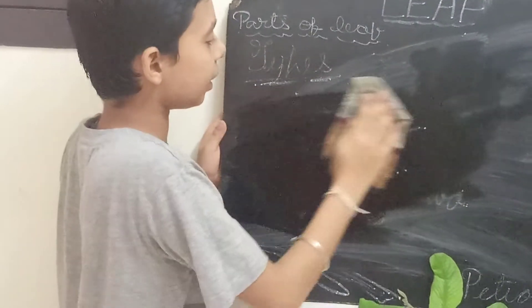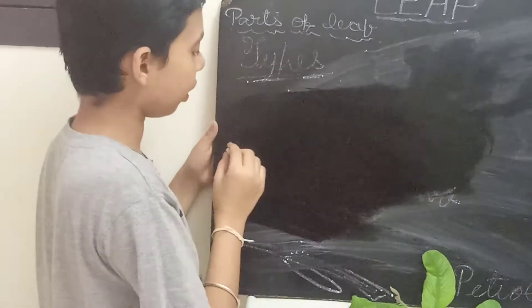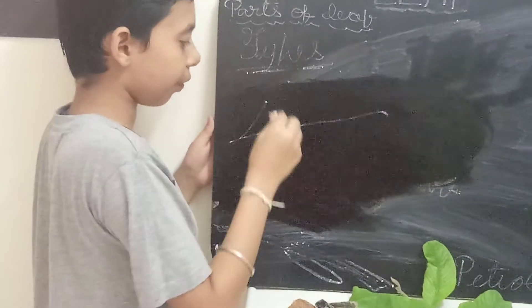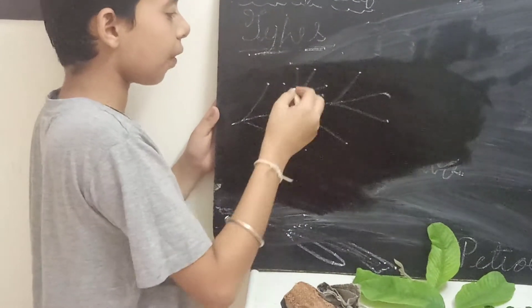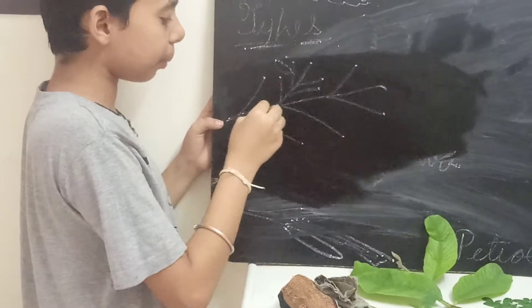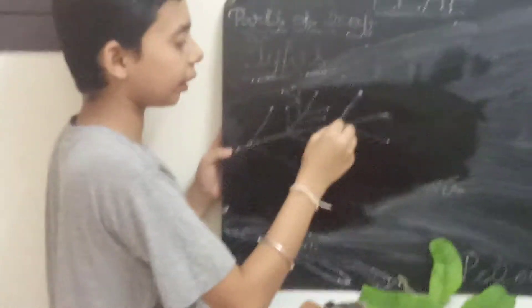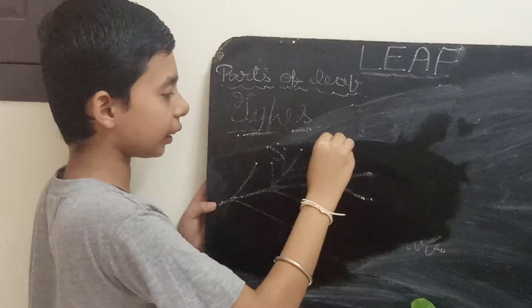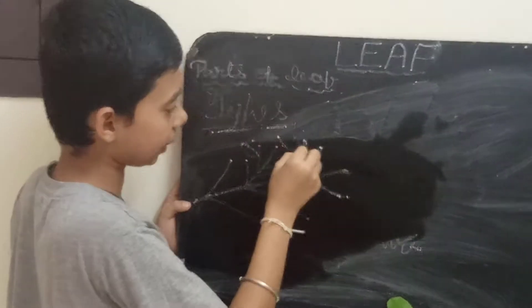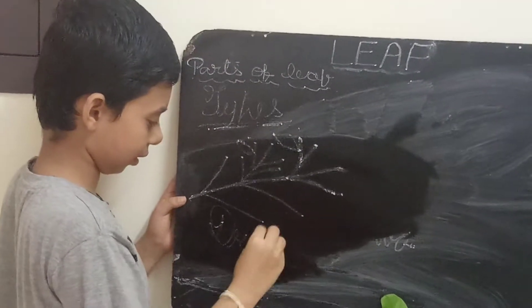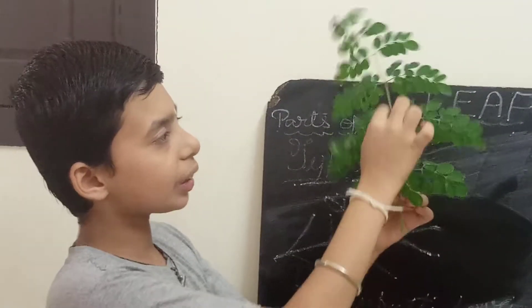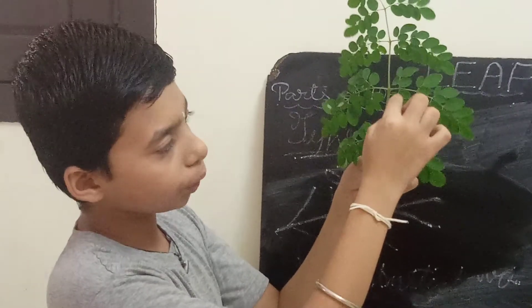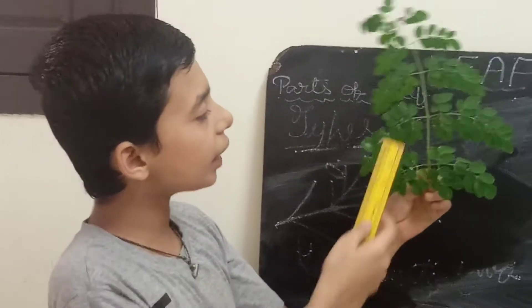Next one is double compound leaf. Here one line goes, from that it is further divided, and from that it is further divided again, and from this leaves arise. The middle one line is going, from that it is further divided, and again divided into small branch-like structures from which leaves arise. Example: drumstick leaves. See here — one line is going, it is divided into these parts, further divided into these parts, and from that leaves arise. This is known as double compound leaf.